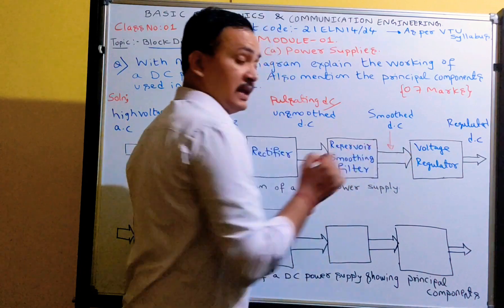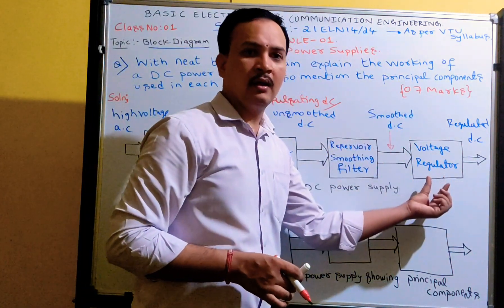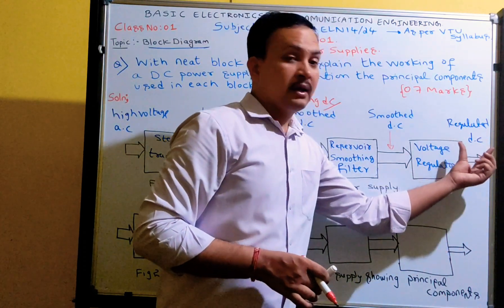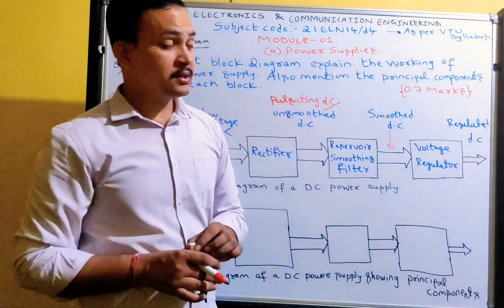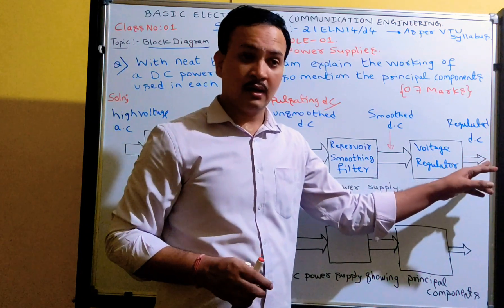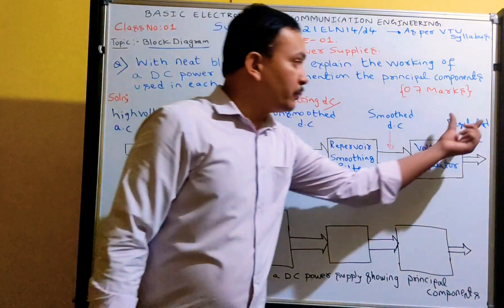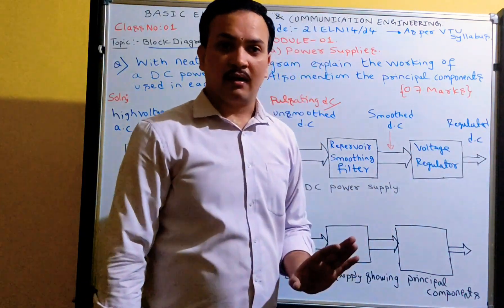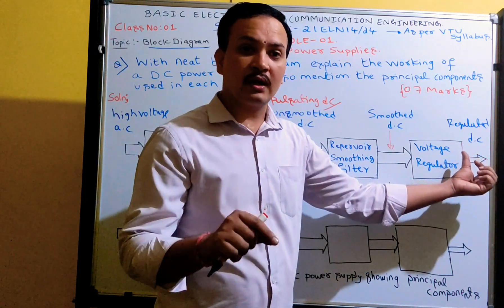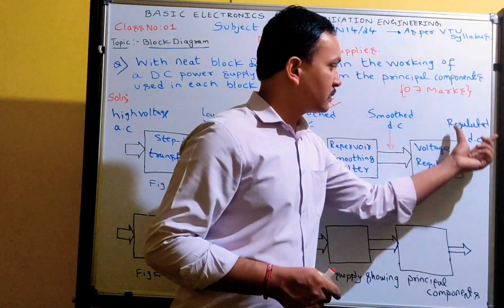Whatever ripple content is contained in this unsmoothed DC waveform gets eliminated with the help of the reservoir circuit. The output of the reservoir will be smoothed DC voltage. This smoothed DC voltage is then given as input to the voltage regulator. The output of the voltage regulator is regulated DC supply — if there are any variations in the load or variations in the mains input voltage, the output voltage remains constant.